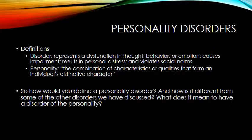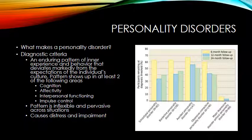The diagnostic criteria for any personality disorder includes certain elements. One is that it has to be an enduring pattern of inner experience and behavior that deviates markedly from the expectations of the individual's culture. The pattern has to show up in at least two of the following areas: thoughts, emotions and emotional reactions to the environment, interpersonal functioning or relationships, and impulse control or decision-making abilities. The pattern has to be inflexible and pervasive across situations — it's this person's way of interacting in all environments, and it's long-standing.